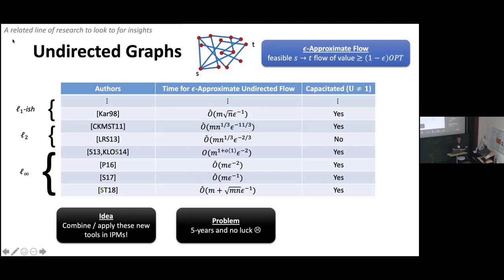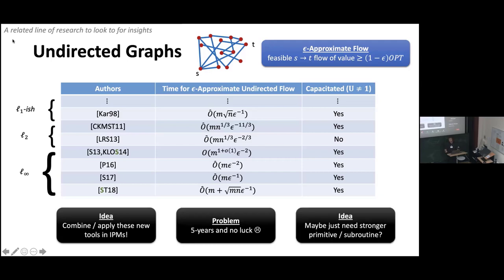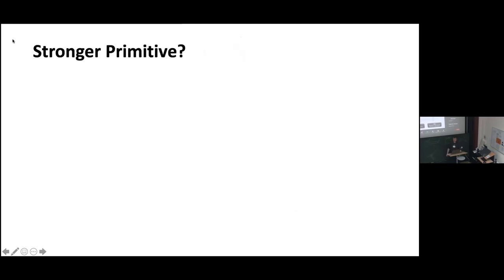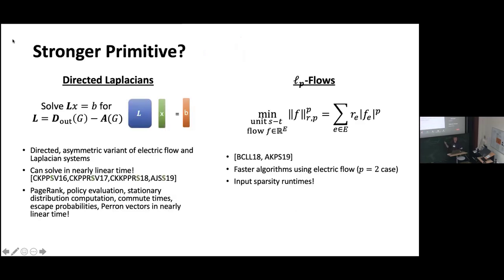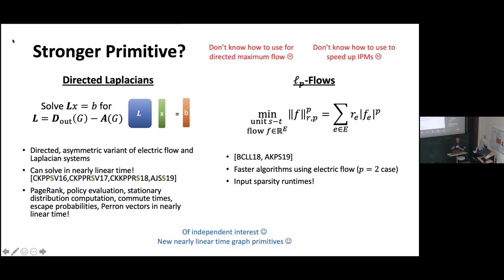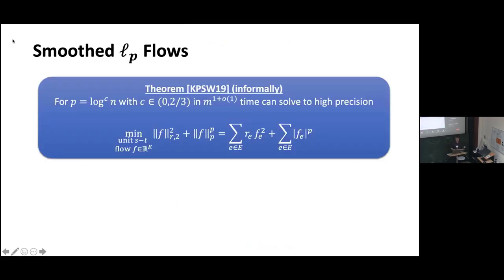We have these new primitives for processing L-infinity approximately on undirected graphs — maybe we can use them in an interior-point-like method to get faster runtimes for maximum flow. This is a great idea; it was one of the first things we tried. But I don't know how to do this directly. We also tried coming up with asymmetric generalizations of solving Laplacian systems and LP flow problems, which led to near-linear time algorithms in different regimes, but I don't know how to use either of these to solve directed maximum flow.